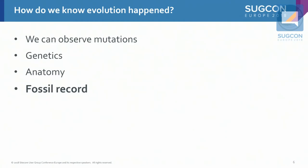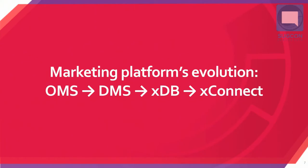How do we know that evolution happens? We can observe mutations, we know about genetics, we can compare anatomy, and we have a fossil record. And in Sitecore, we also have a fossil record. The marketing platform has evolved from OMS to DMS to XDB, and now XDB is accessed with the new product, XConnect. I'm going to walk you through the evolution of the marketing platform.